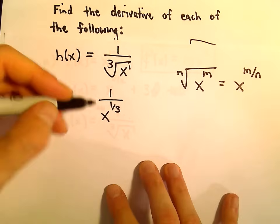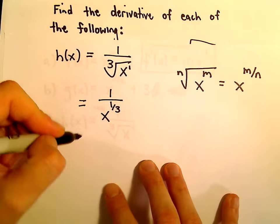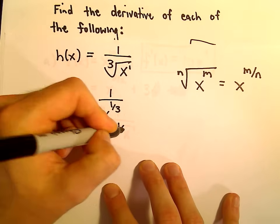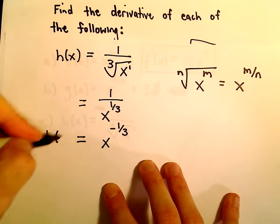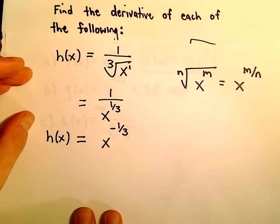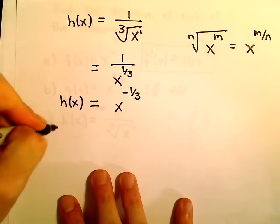Well, to use that derivative rule, we need sort of the x to be in the numerator. Well, I can pull the x upstairs, and I just have to change the sign on the exponent. So really h of x, I can rewrite that as just saying it's x to the negative 1 3rd. And now I'm in a good spot where I can take the derivative.